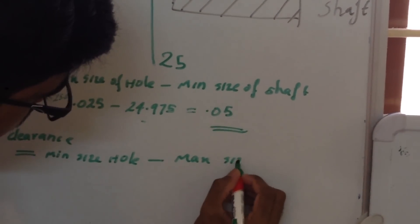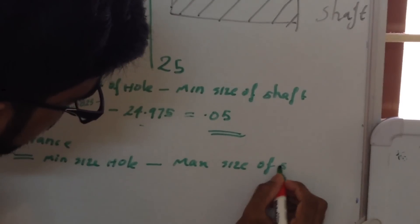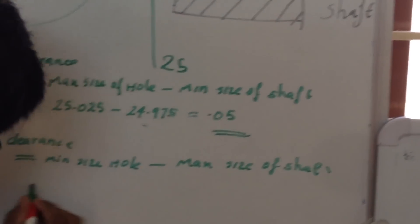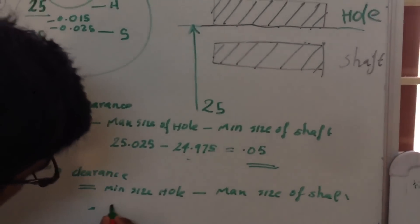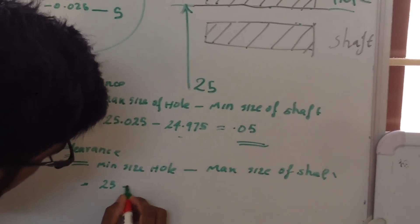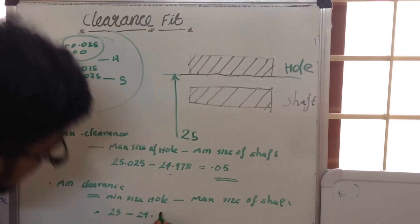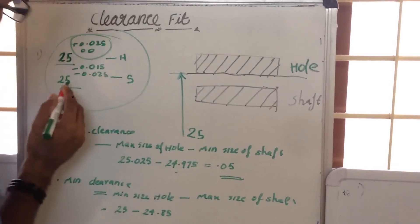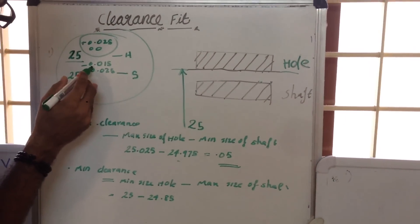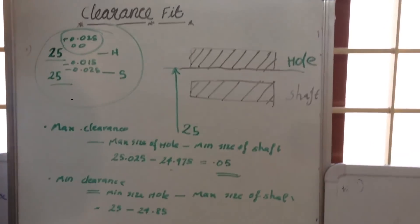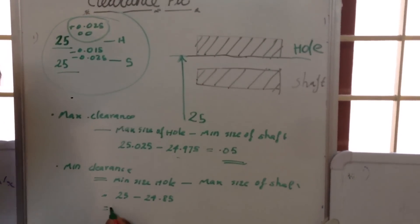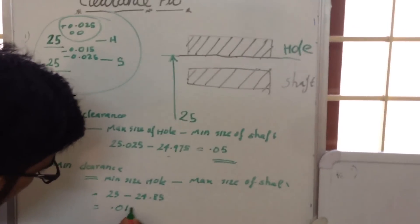This will become 25 minus 24.985. That is 25 minus 24.985. This is equal to 0.015.